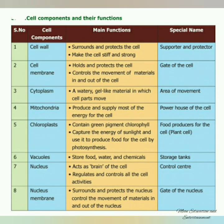Let us see the components of cells and their functions. Cell Wall: Its function is to surround and protect the cell, making it stiff and strong — its special name is 'supporter and protector.' Cell Membrane: It holds and protects the cell, controls the movement of materials in and out — special name: 'gate of cell.' Cytoplasm: A watery gel-like material in which cell parts move — special name: 'area of movement.' Mitochondria: Helps produce and supply most of the energy for the cell — special name: 'powerhouse of the cell.'